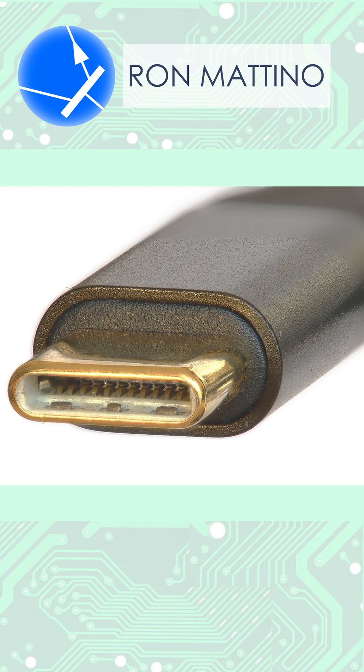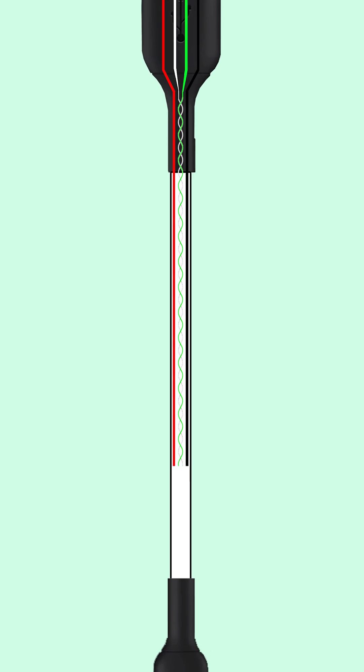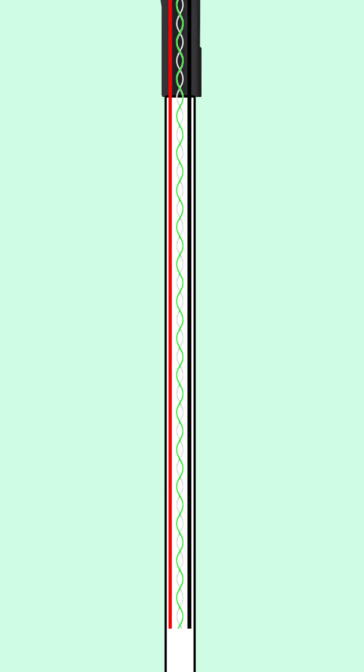A USB 2.0 cable carries 4 wires: black and red for power, and a balanced green-white twisted pair for data.